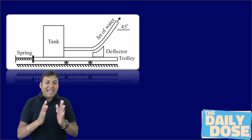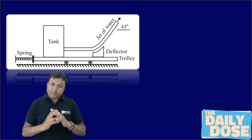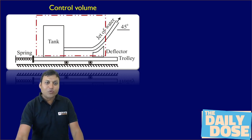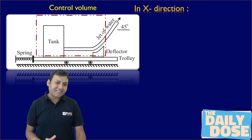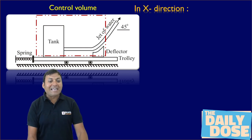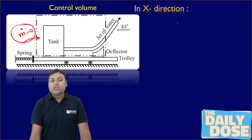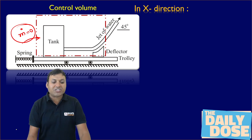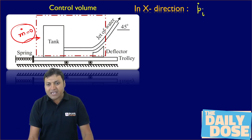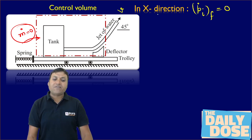Because the tank and deflector both are placed on the trolley and the trolley is connected to the spring, we select our control volume to include both the tank and the deflector, and apply the momentum equation in the x-direction. Since there is no fluid entering into this control volume, the mass flow rate entering is zero. Therefore, the initial momentum of the fluid in the x-direction is zero.